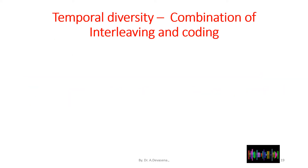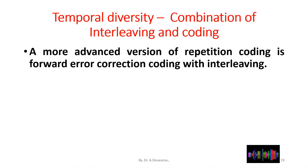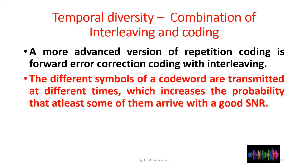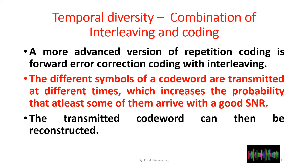The third method of temporal diversity is a combination of interleaving and coding. A more advanced version is forward error correction coding with interleaving. The different symbols of a code word are transmitted at different times, which increases the probability that at least some of them arrive with a good SNR (signal to noise ratio), and the transmitted code word can then be reconstructed.